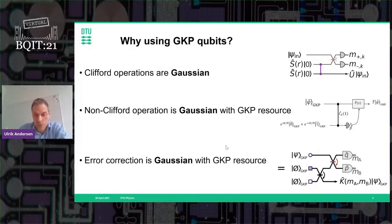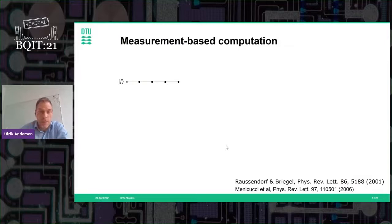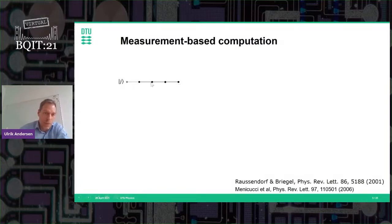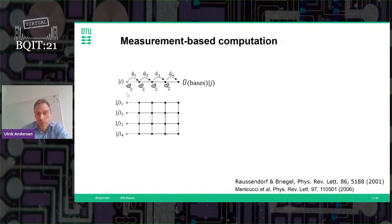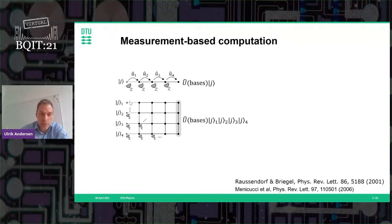We are using a measurement-based approach where gates are implemented through measurements. This starts with generating an entangled cluster state — for example, a one-dimensional cluster state with four entangled modes entangled with an input state. Through single measurements of the different nodes you can perform single-mode unitary transformations or gates. If you have more than one input mode you need to go to two dimensions: a two-dimensional cluster state with four input modes, where different sequences of measurements implement both single and two-mode gates.